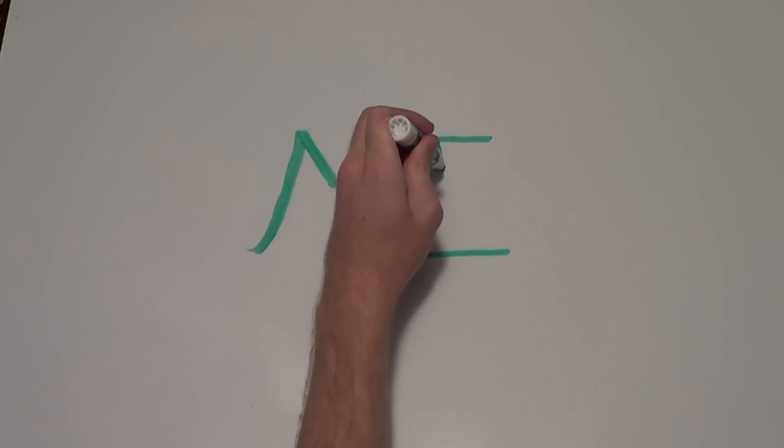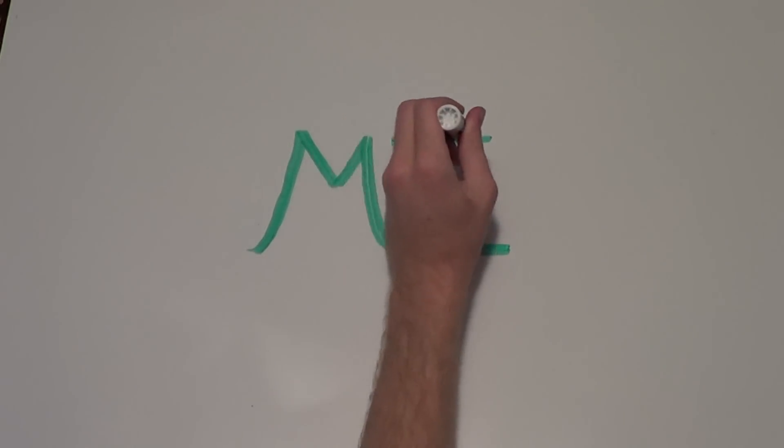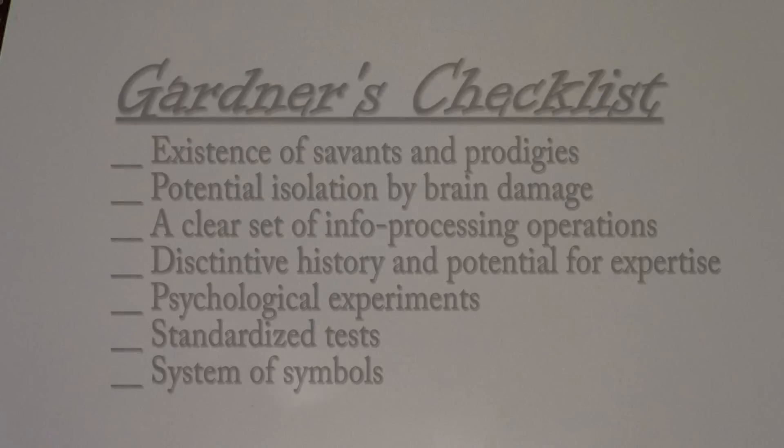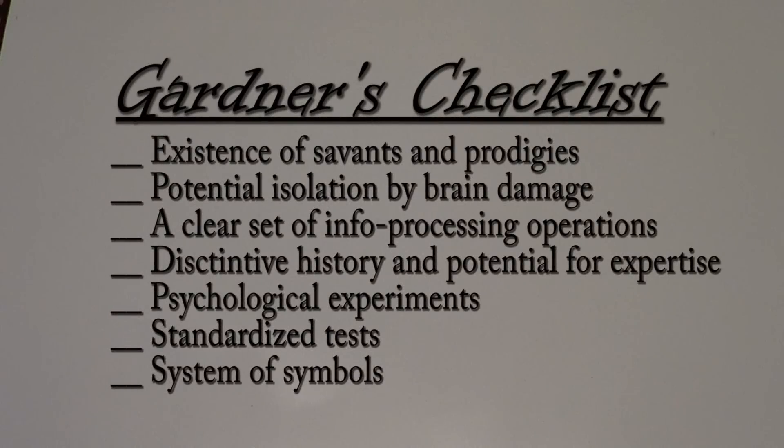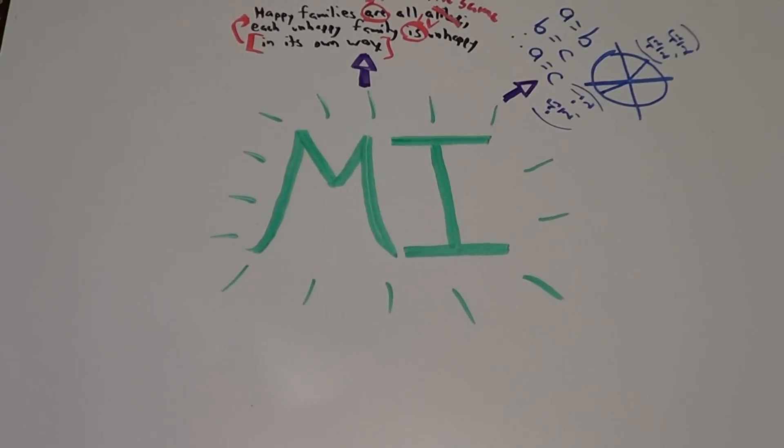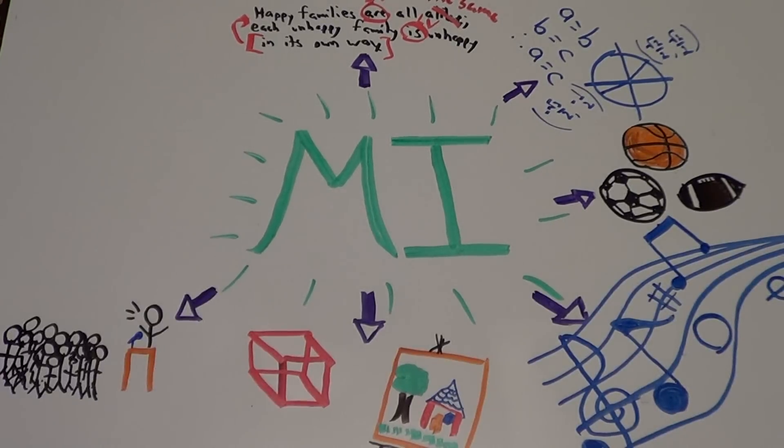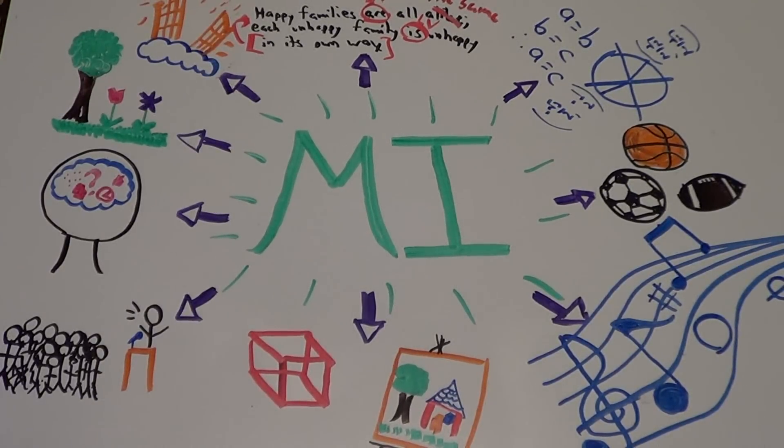His theory almost completely contradicted Spearman's ideas by suggesting that intelligence does not manifest itself in one form, but in many distinct, independent parts. Gardner composed a list of criteria to consider a certain ability a form of intelligence, and from that criteria he derived a growing list of intelligences that he has identified so far.